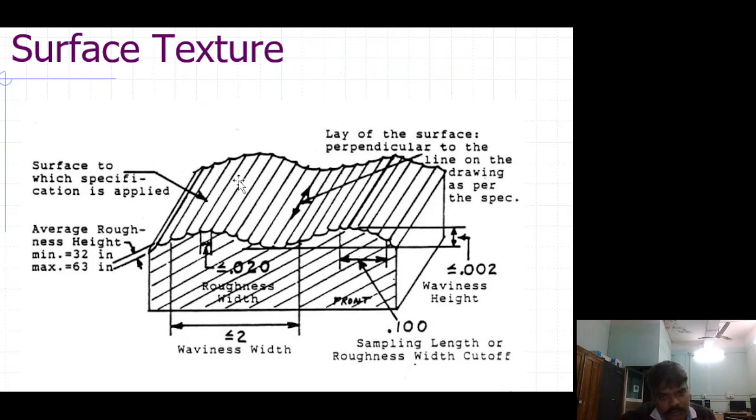This is the surface texture. Meaning of the specification: surface to which specification is applied, lay of the surface perpendicular to the line on the drawing as per the specification.